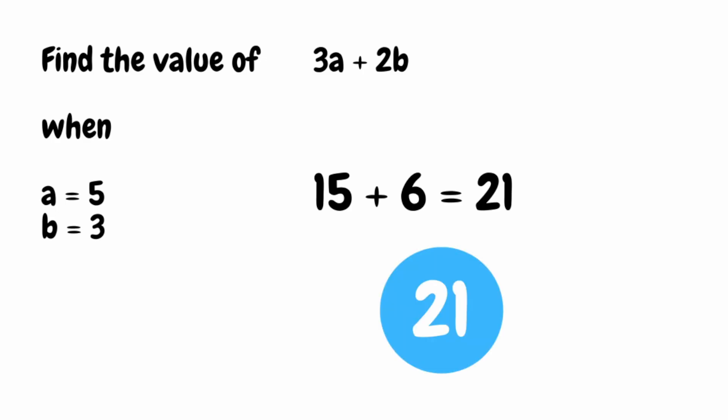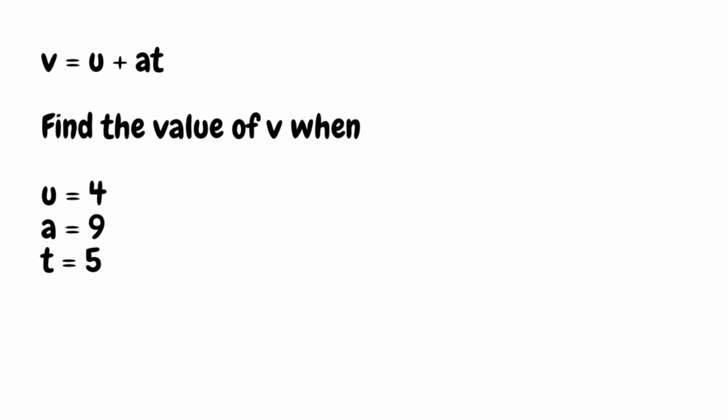Let's take a look at another example. In this next question, we've got v is equal to u plus at. We want to find the value of v when u is equal to 4, a is equal to 9, and t is equal to 5. So what I'm going to do is bring this equation down and then start substituting into it. We're finding the value of v, so that's going to remain as v. The first thing I'm going to do is substitute the value for u, which is 4.